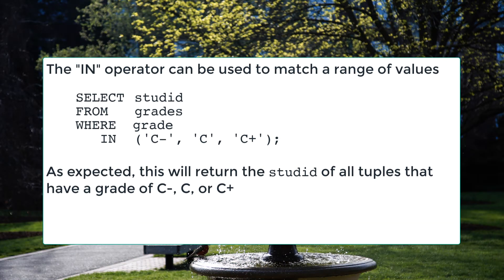The first use of subqueries is when we're thinking about matching a value in our query against multiple values. For example: SELECT student ID FROM grades WHERE grade IN (C-, C, C+). The IN keyword is very useful here because I can just list out the range of values I am willing to take, and the IN operator will match any tuple in which the grade matches any of those values. Now, this is not a subquery — this is just a range of values. Where it becomes interesting is that I am now able to replace that list of values with another query, and that makes it more interesting in query building.